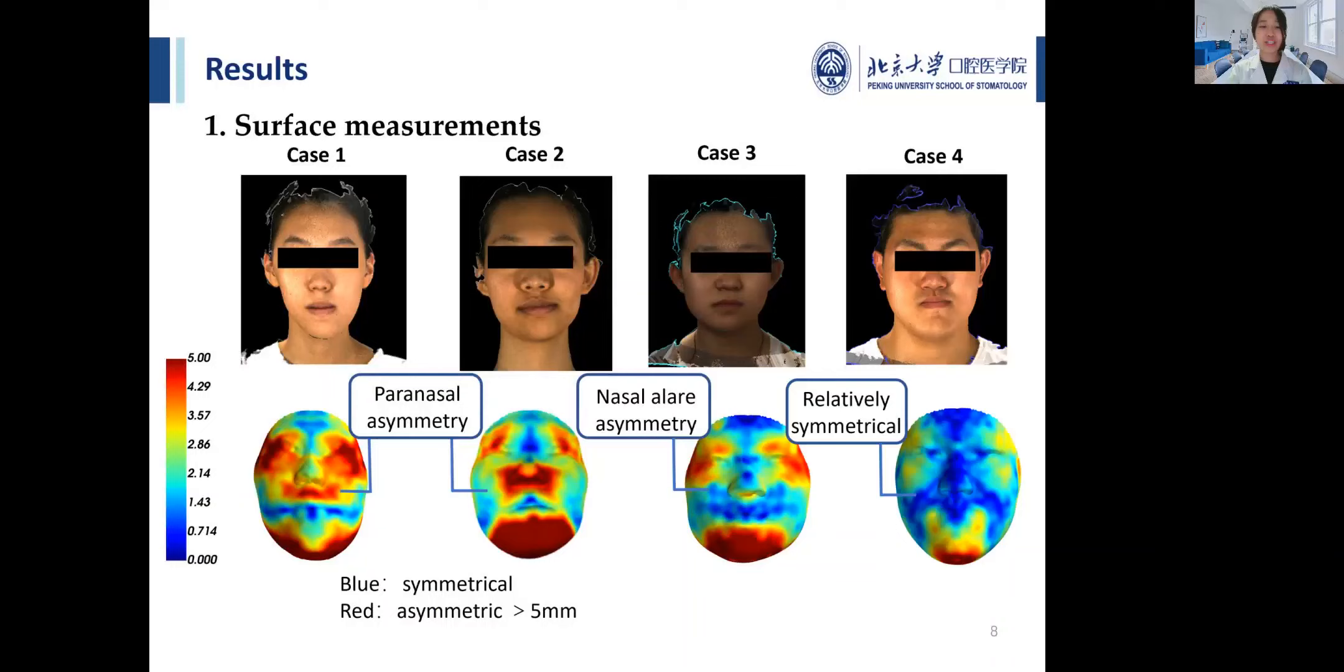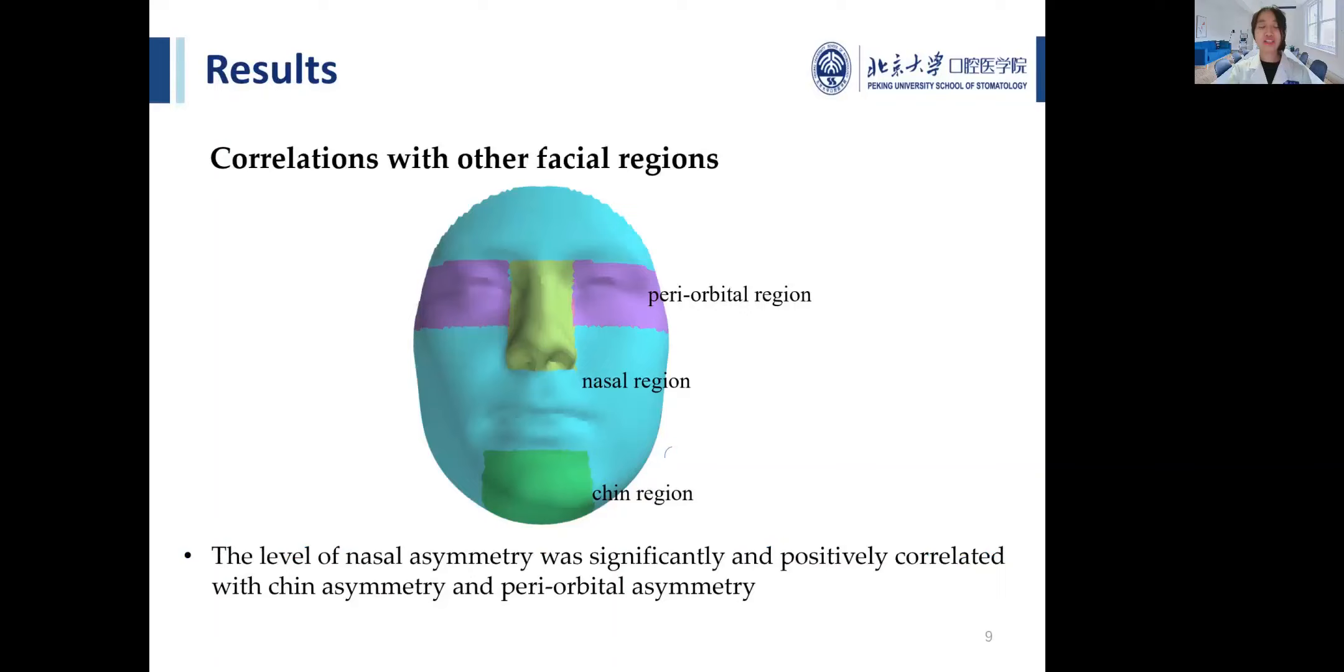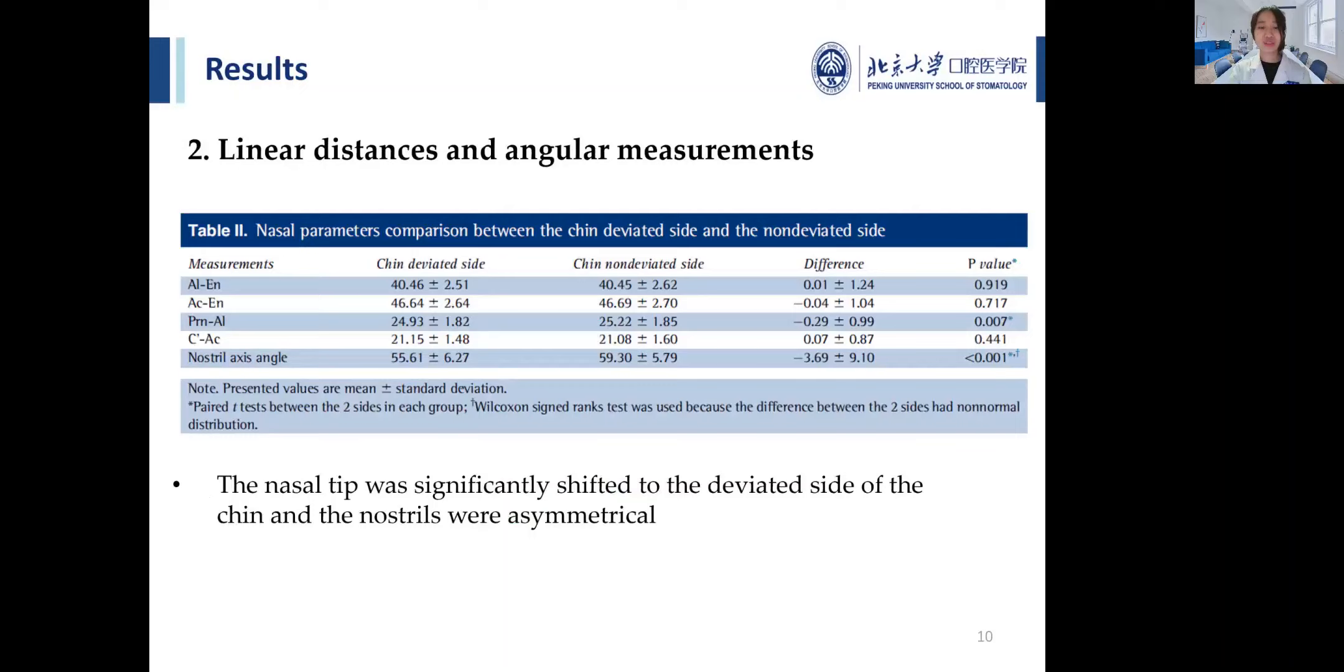The correlation analysis revealed that the level of nasal asymmetry was significantly and positively correlated with chin asymmetry and periorbital asymmetry. Linear distance and angular measurement showed that the nasal tip was significantly shifted to the deviated side of the chin, and the nostrils were asymmetrical.